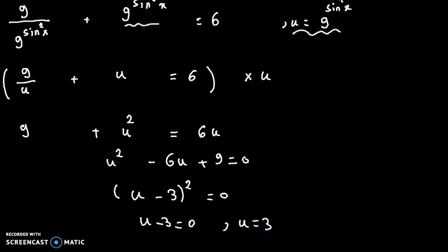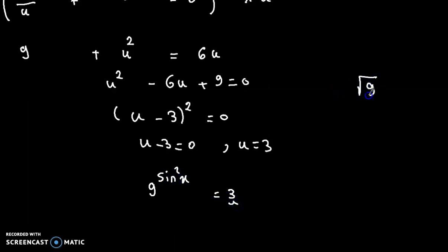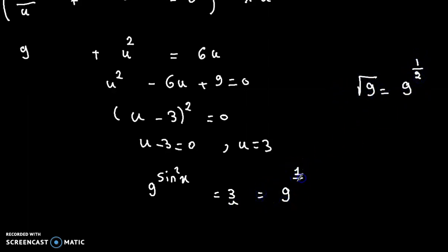Since u equals 9 to the power sine squared x, we have 9 to the power sine squared x equals 3. And 3 equals the square root of 9, which equals 9 to the power 1 over 2. So we have 9 to the power 1 over 2, meaning sine squared x equals 1 over 2.